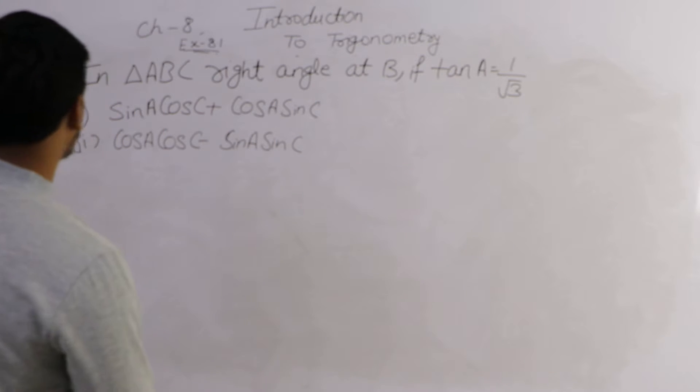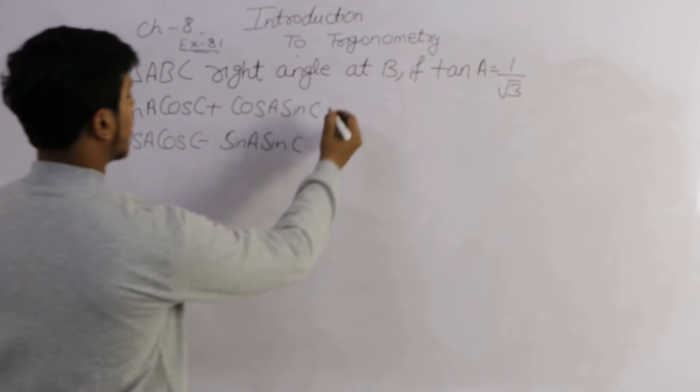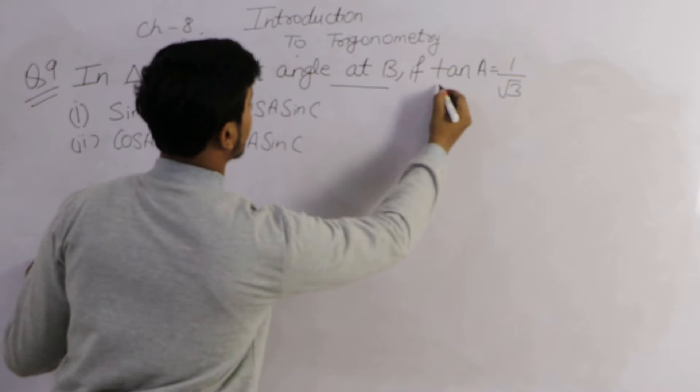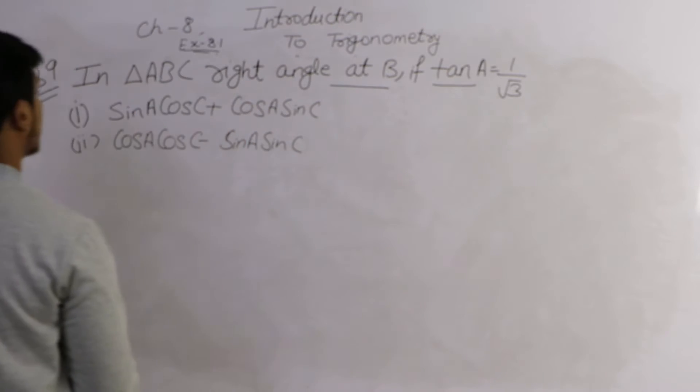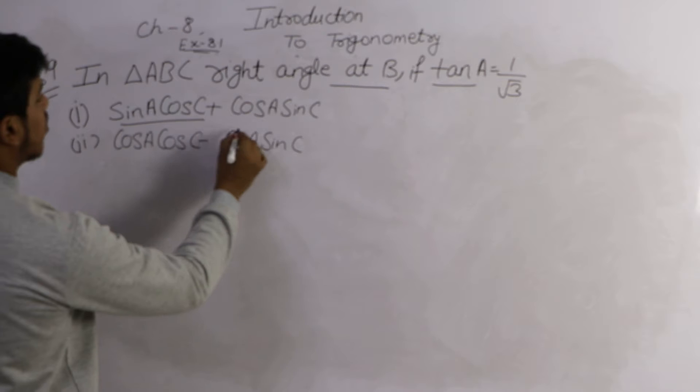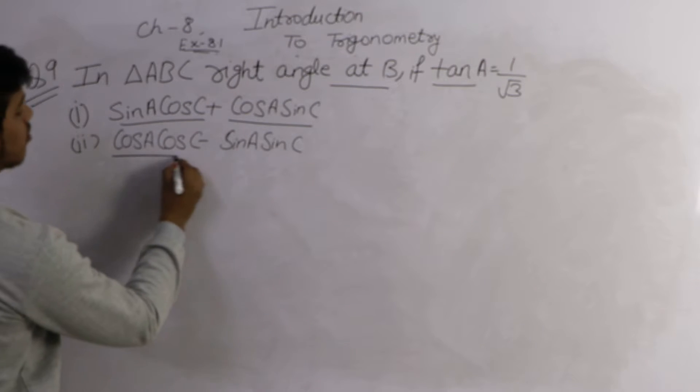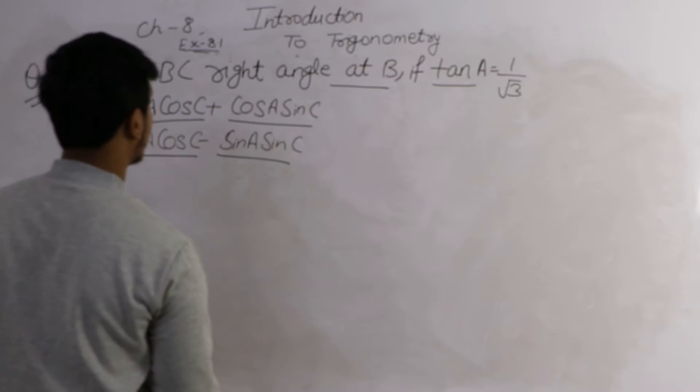Question number 9 is: In triangle ABC, right angle at B, and if tan A is equal to 1 by root 3, we have to calculate sin A cos C plus cos A sin C, and the second part is cos A cos C minus sin A sin C.